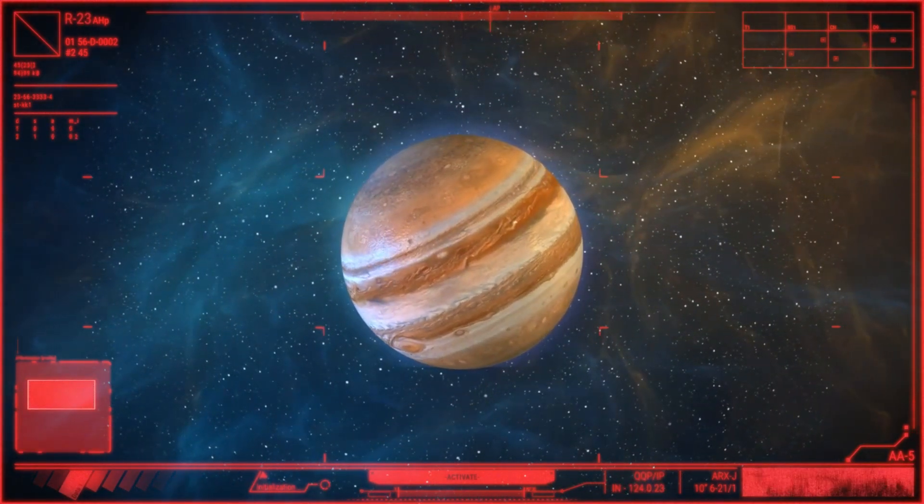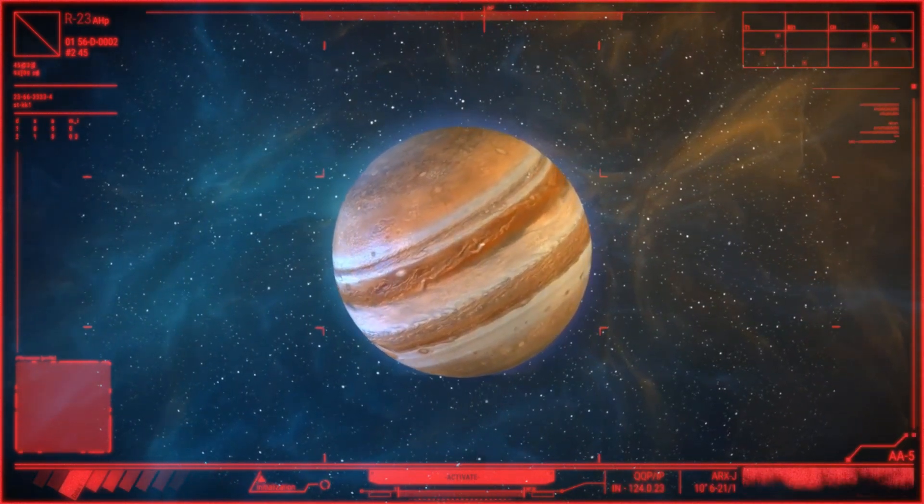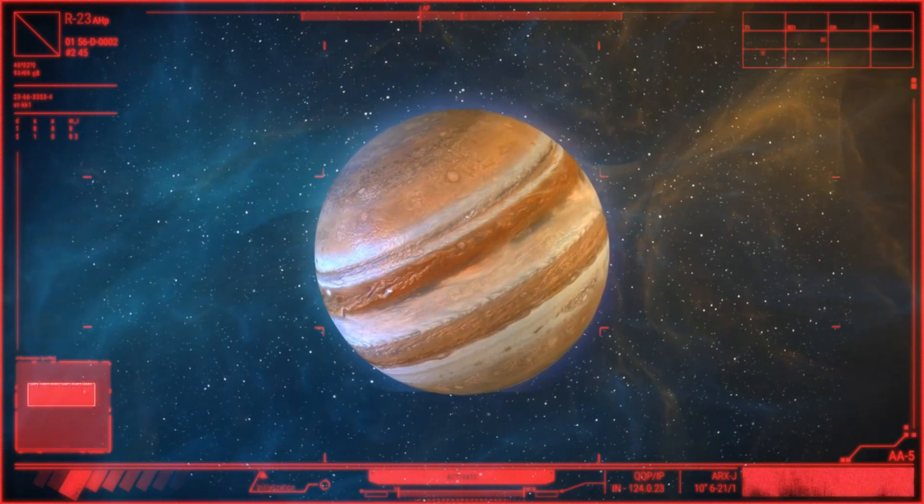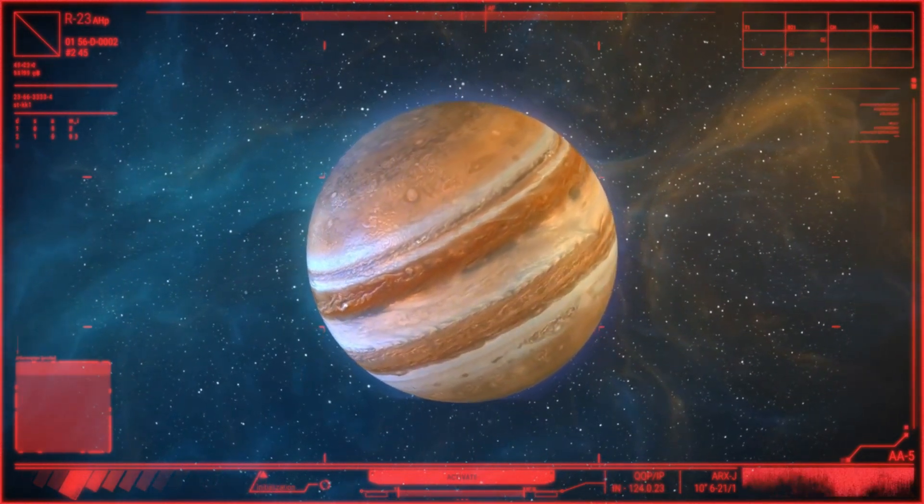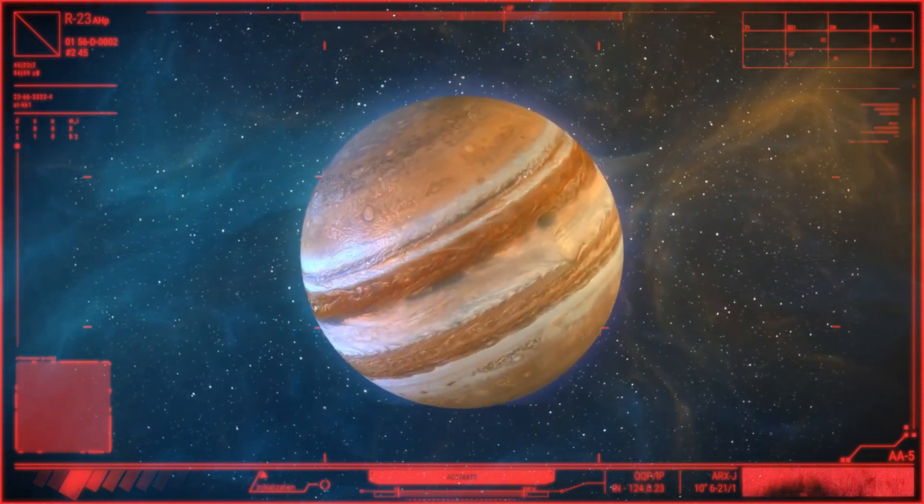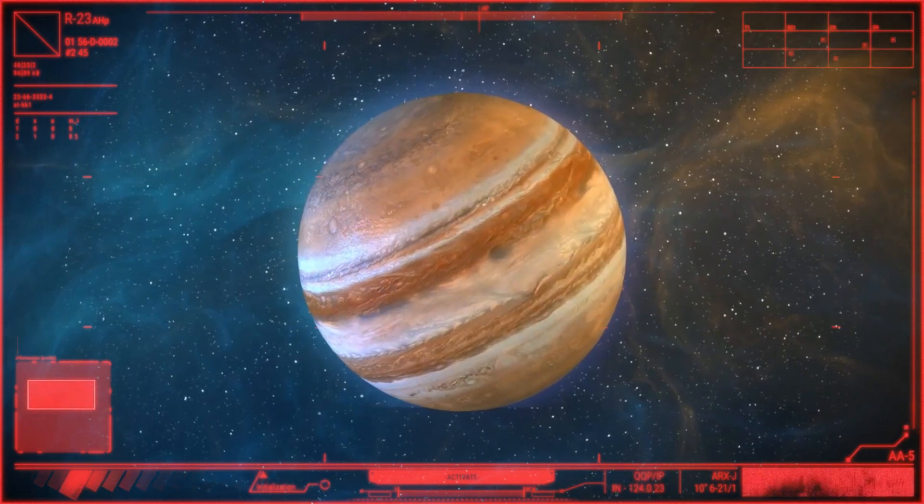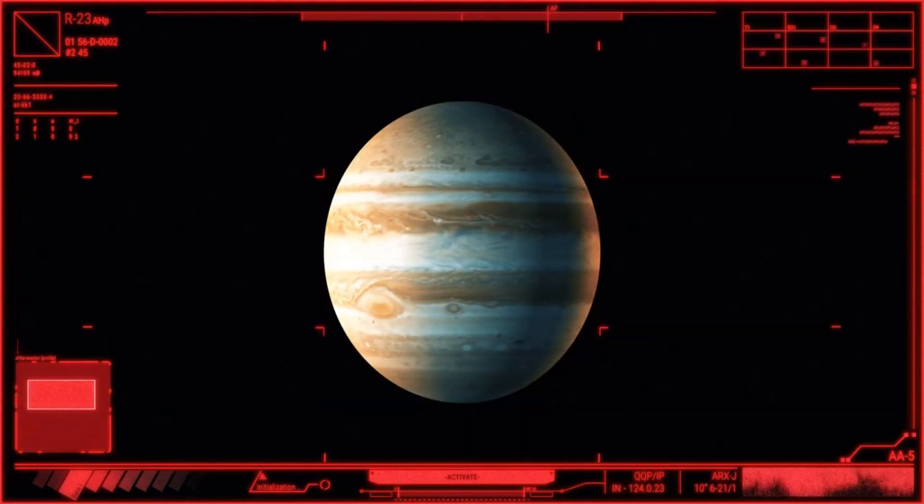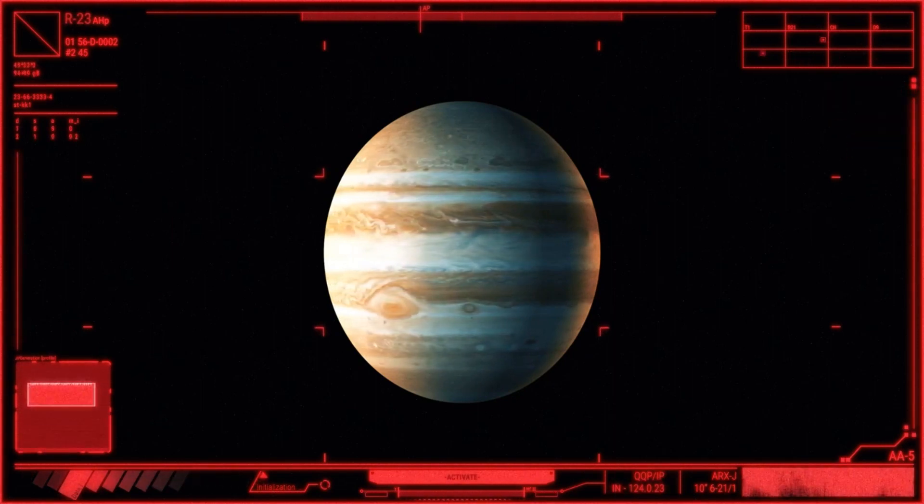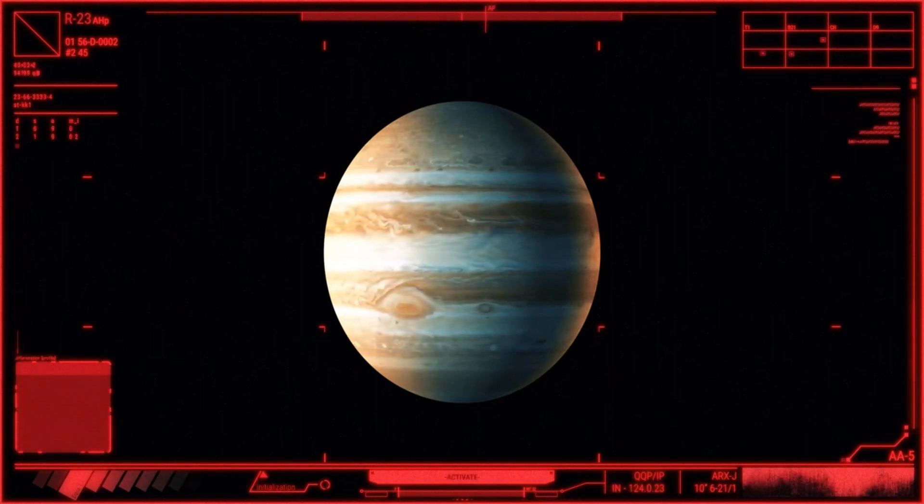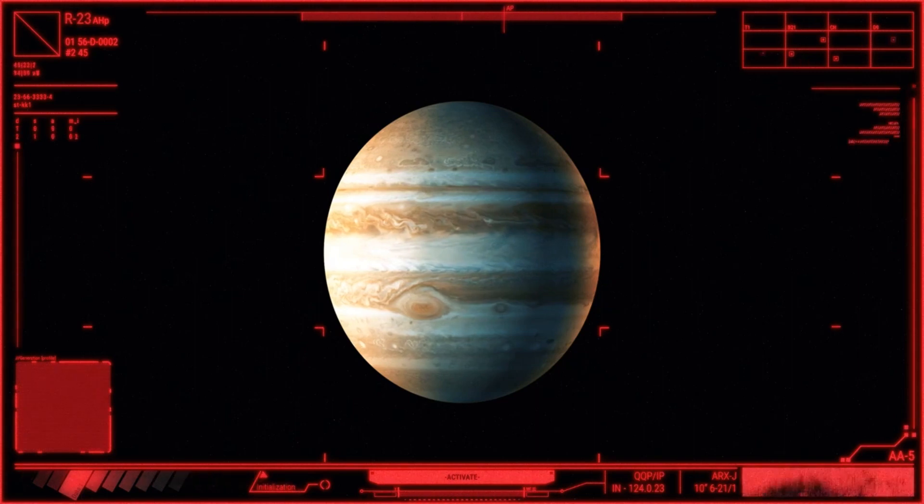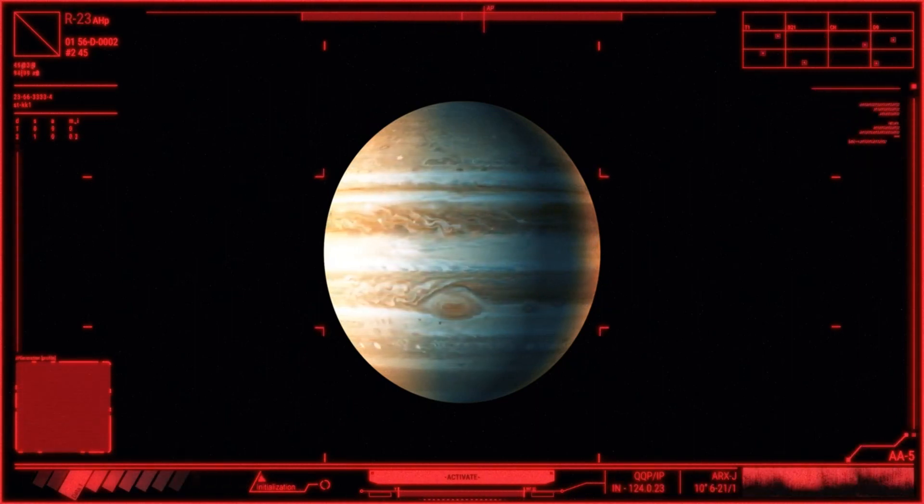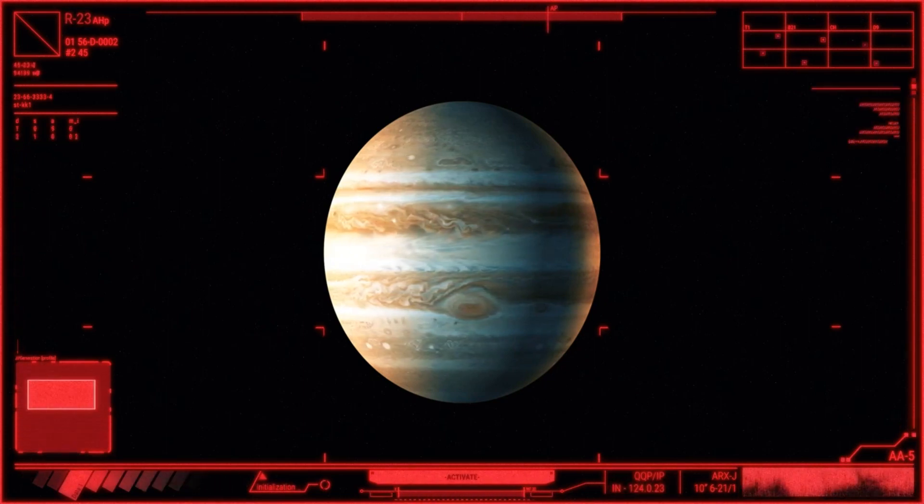Uranus. Uranus is the seventh planet from the Sun and is distinguished by its unusual position. Unlike other planets, Uranus rotates on its axis, which is almost lying on its side. It consists mainly of ice and gases such as hydrogen and helium. The distance from Uranus to the Sun is about 2.9 billion kilometers. Interesting fact: Uranus has a system of rings, although they are much thinner and less visible than those of Saturn.